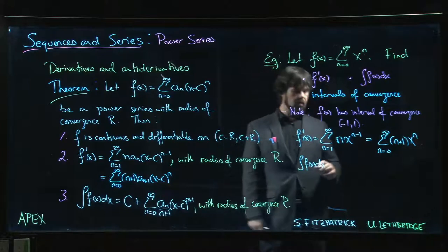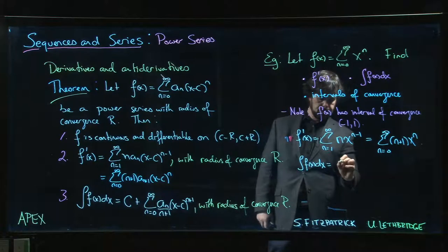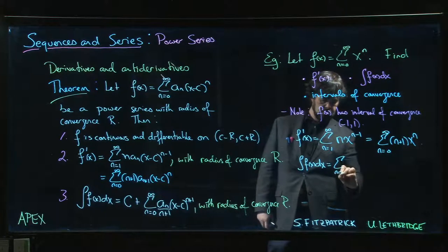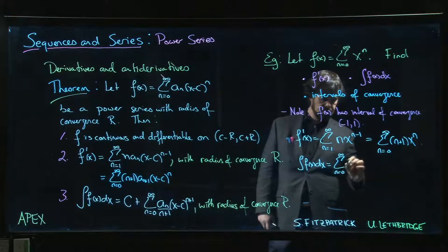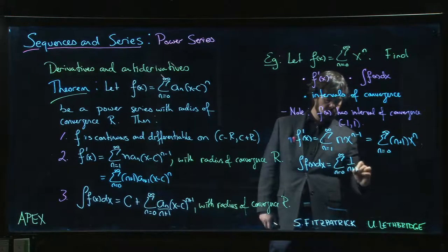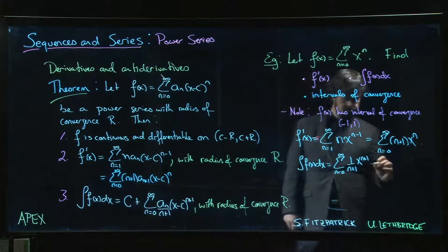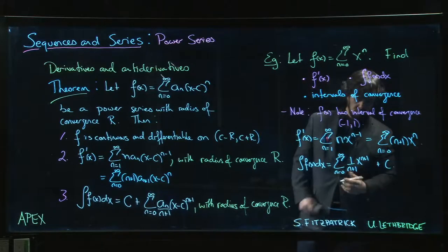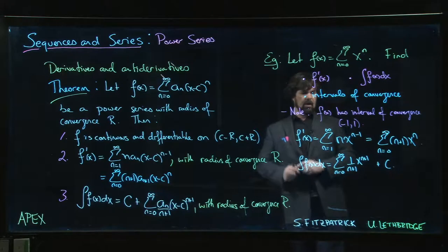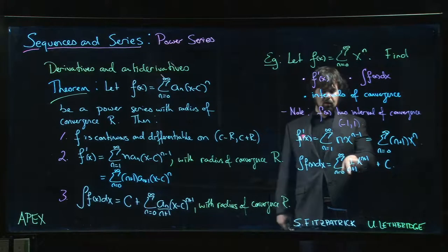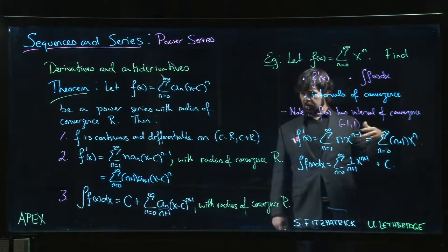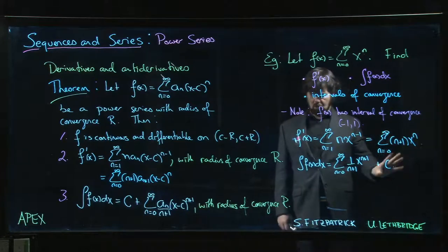The antiderivative is going to be the sum from n=0 to infinity of (1/(n+1))·x^(n+1), possibly plus a constant. Again, the ratio test is going to give you (n+1)/(n+2)—same story.